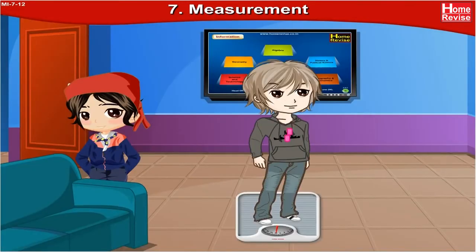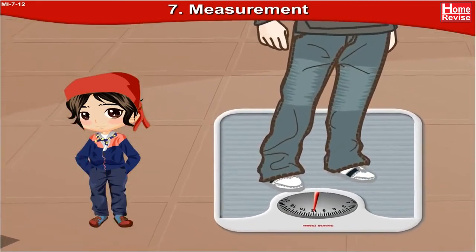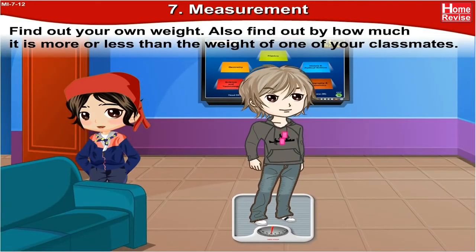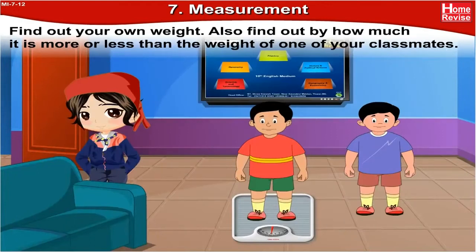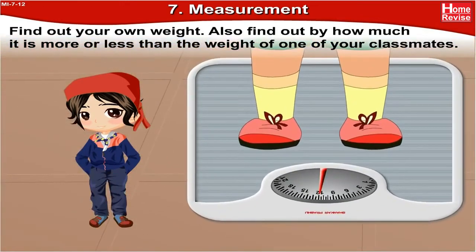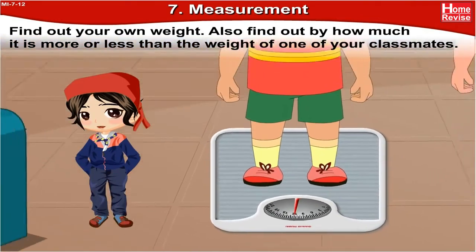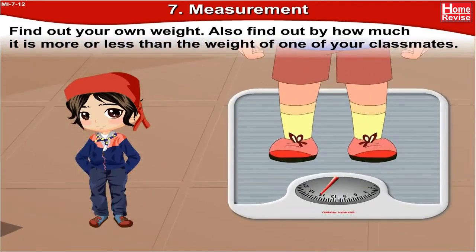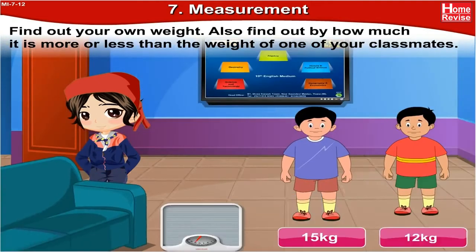Children, I'm sure you'd love to know your weight. Just stand on a weighing machine and check the numbers. Find out your own weight and also find out by how much it is more or less than the weight of one of your classmates. Tony weighs 12 kg, and Nandu's weight is 15 kg. The weight of Nandu is more than the weight of Tony.